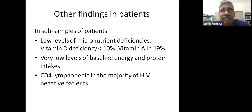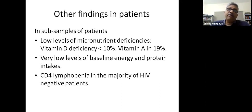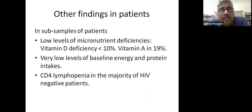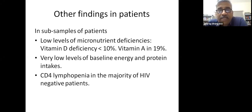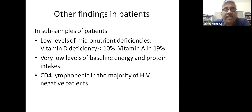Interesting baseline findings include low levels of vitamin A and D—vitamin A levels can be lower in active TB and may return to normal—very low baseline energy and protein intakes, and notably CD4 lymphopenia was seen in the majority of these patients, who were actually HIV-negative.